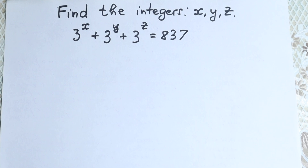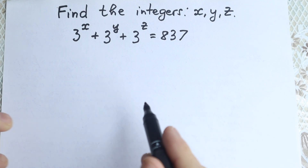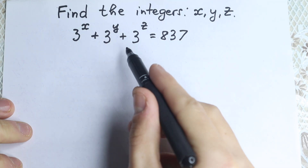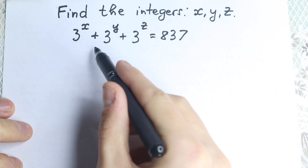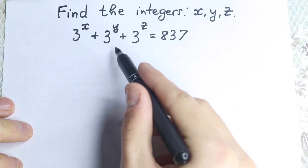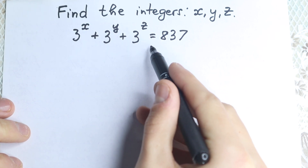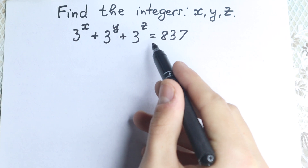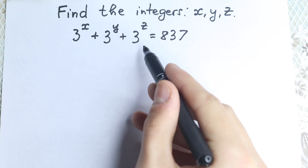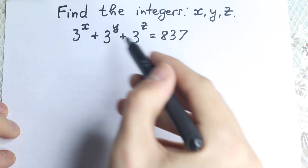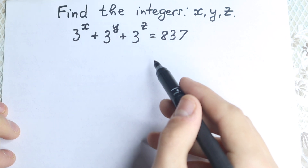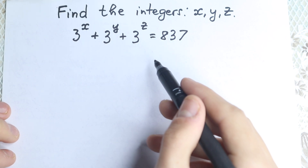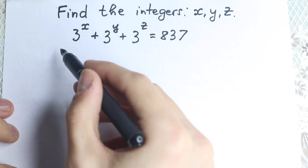Hello my friend, happy to see you here. In this video we are going to solve a really interesting algebra problem. We need to find the integers x, y and z. We have 3 to the x plus 3 to the y plus 3 to the z equal to 837. I'm going to show you the best method, a really interesting one.